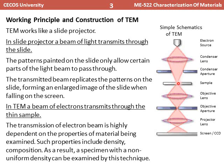After passing through the sample, the beam goes through the objective lens and objective aperture. The final part is the projector lens, which focuses the beam onto the screen or CCD camera so that you can view the object of interest.